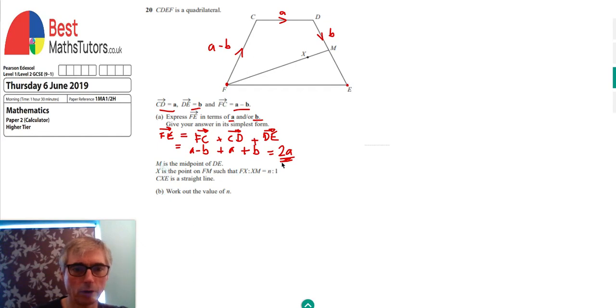Now we're looking at part B, which is more difficult. We're told that M is the midpoint of line DE, so it splits it in the ratio 1 to 1. We're also told that X is a point on FM such that FX to XM is in the ratio N to 1. We're also told that CXE is a straight line.